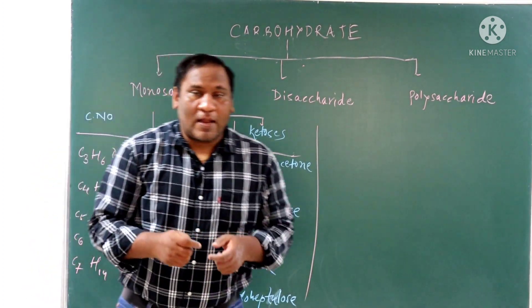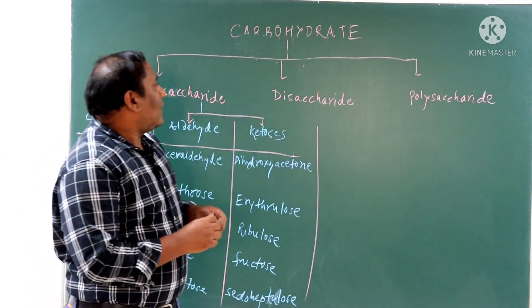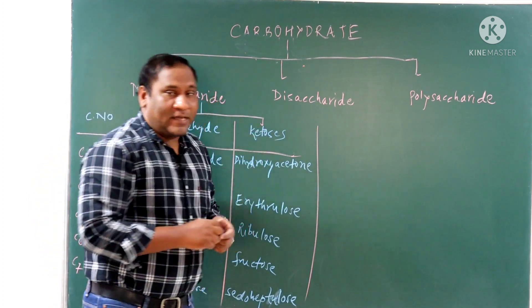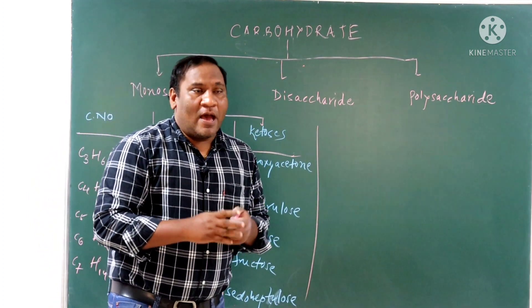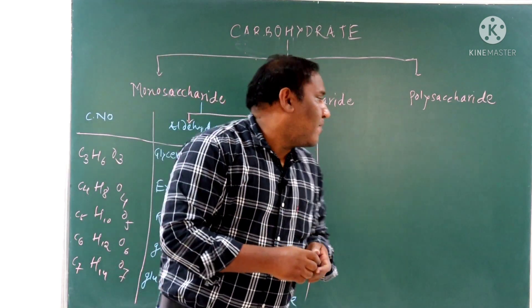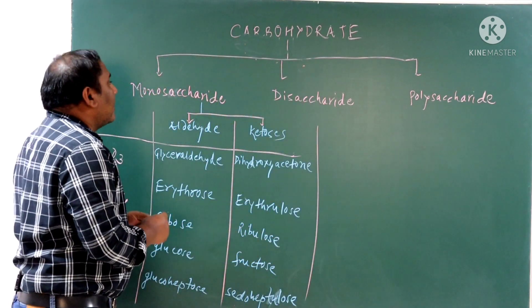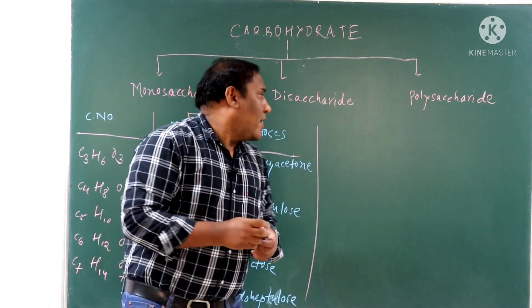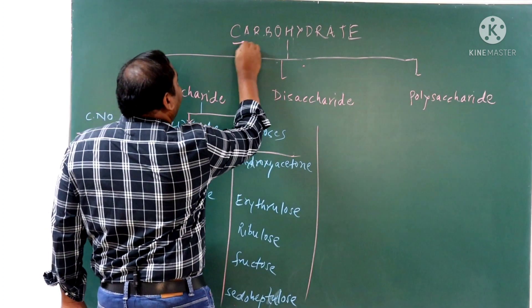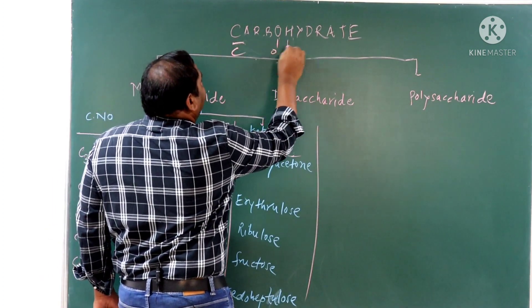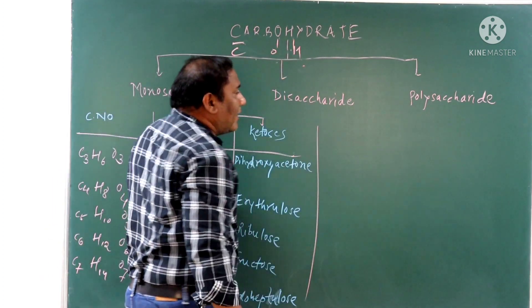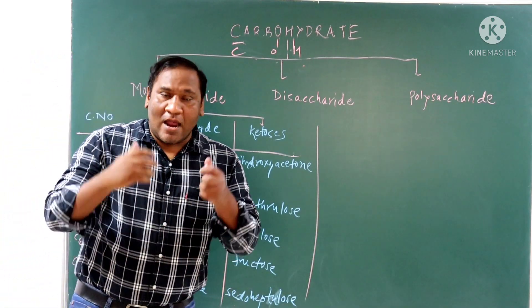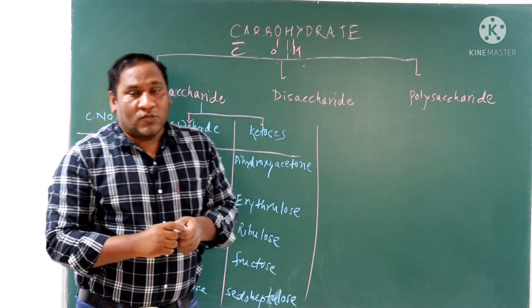Hello students, welcome to my YouTube channel. Today's topic is chemistry of carbohydrates and its classification. Carbohydrates are widely distributed in plants and animals. Carbohydrates are also called saccharides, meaning sugar. Chemically, carbohydrates contain carbon, oxygen, and hydrogen; other elements like nitrogen, phosphorus, and sulfur may also be present.